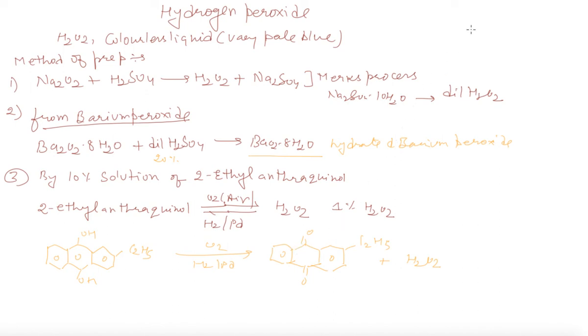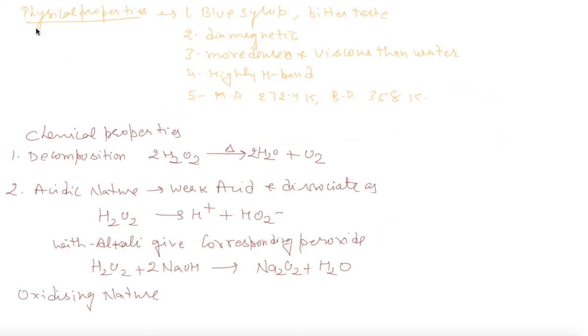Now we can discuss the physical properties of H2O2. It is blue, sour, bitter in taste, diamagnetic. It is more dense and viscous than water, highly associated with hydrogen bonds. Its melting point is 272.4 Kelvin and boiling point is 358 Kelvin.